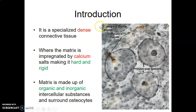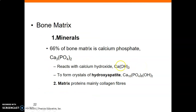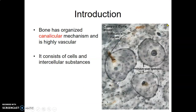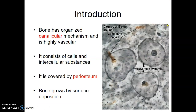The outer part — compact bone — has a microscopic organization called the Haversian system. This is a Haversian system here, and there's another one here. The matrix's inorganic component has calcium phosphate, calcium hydroxide, and calcium hydroxyapatite. The matrix also has ground substance and fiber. Bone has collagen type 3. These are the Haversian systems of compact bone.